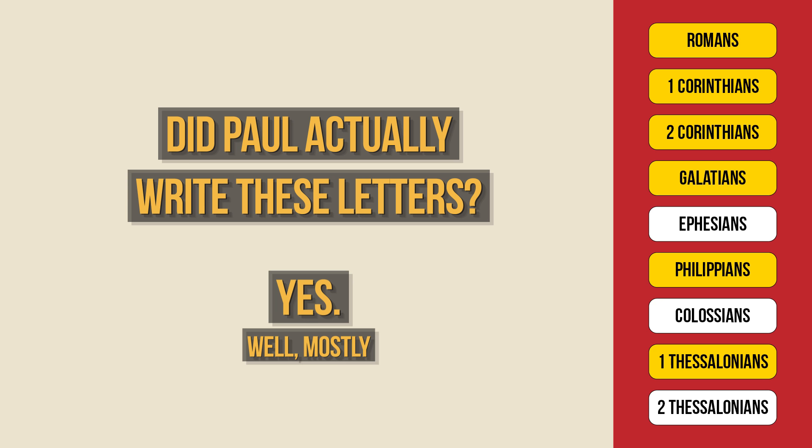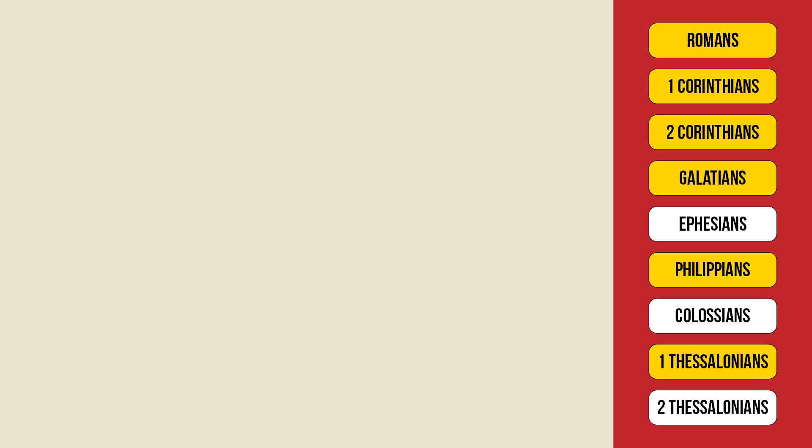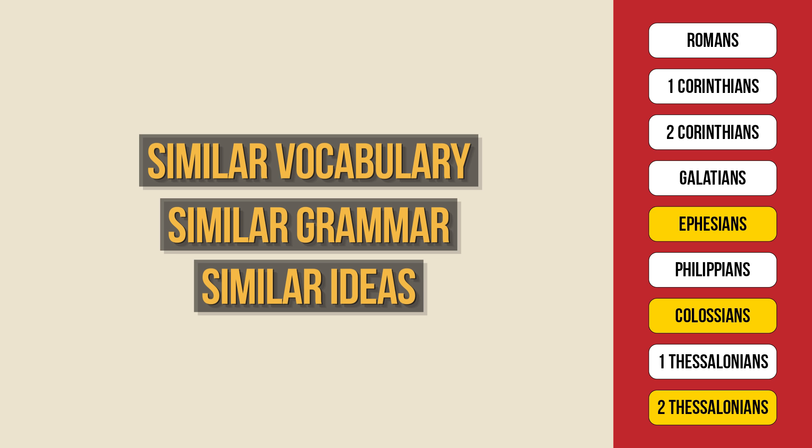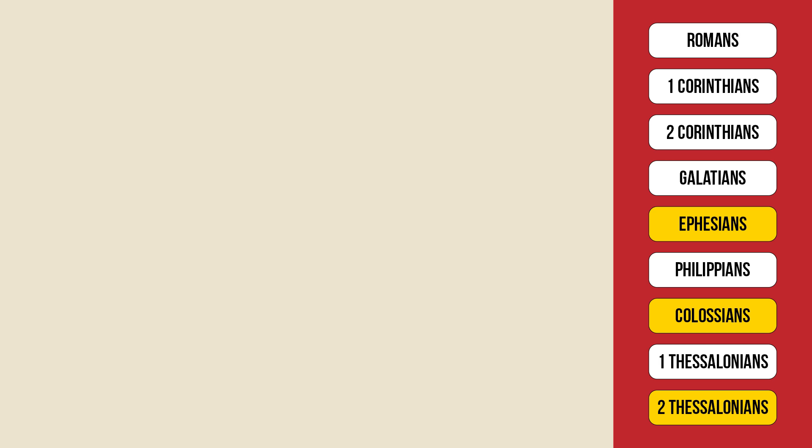How do scholars make distinctions like this? Well, it mostly boils down to style. The six epistles thought to be genuine all share a very similar writing style, similar vocabulary, similar grammar, and similar ideas. The other three stand out as being different. Now, this could indicate that Paul simply used an assistant to write these letters, or that he wrote them at a later date or when he was in a very different mood. Scholars are divided on this.